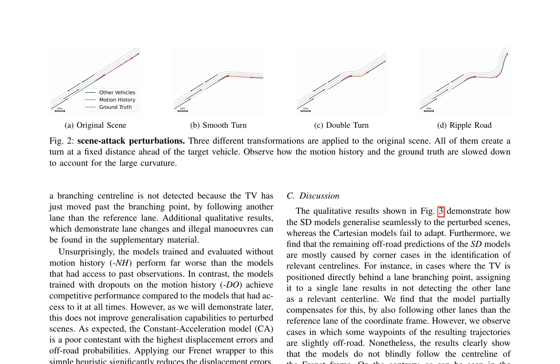They observe that displacement errors and off-road probabilities increase drastically for Cartesian models when perturbing the scenes, whereas SD models are much more robust, with off-road probabilities only increasing by 2.5 percentage points.